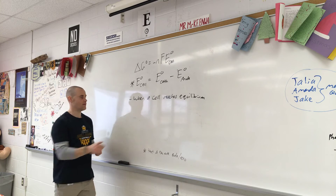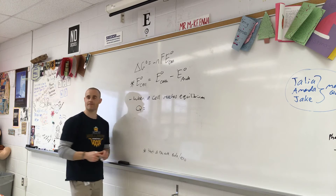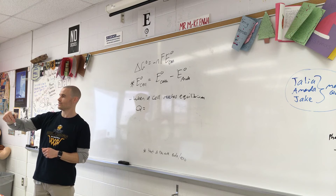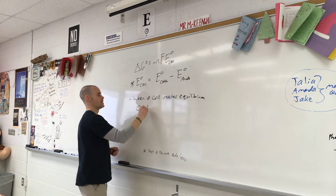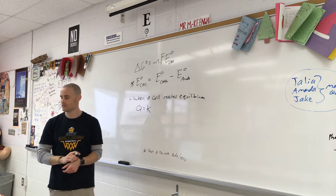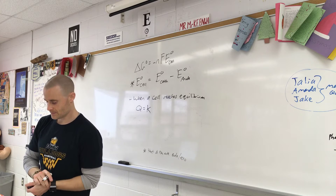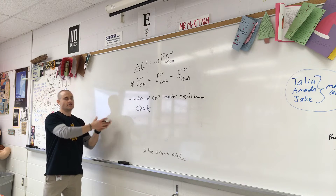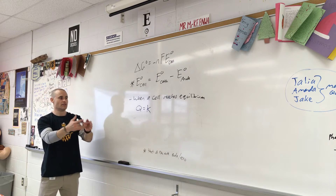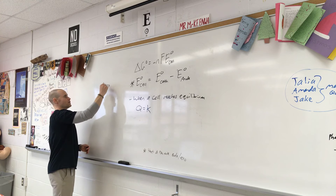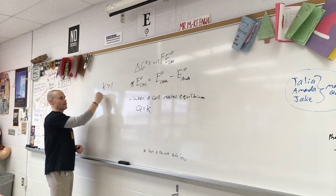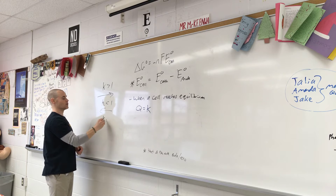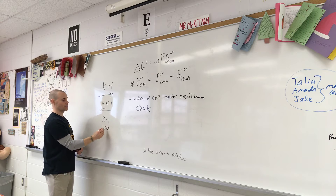Q equals K at equilibrium. If K is really big, we're favoring forward. If K is really small, we're going in reverse. And if K equals 1, we're at equilibrium — they're both occurring at the same time. Remember: if Q is bigger than K, we shift towards reactants; if K is bigger than Q, we shift towards products.